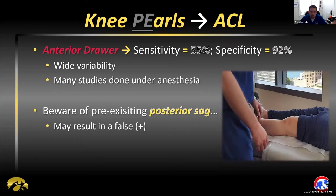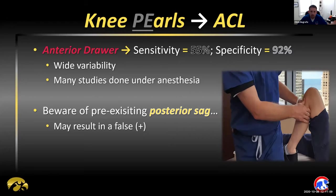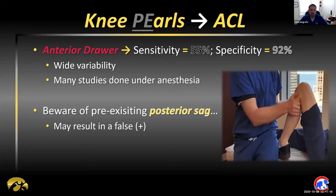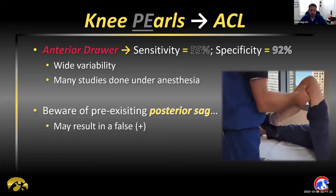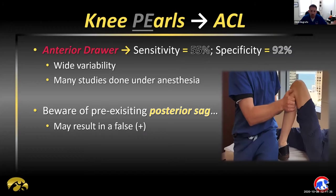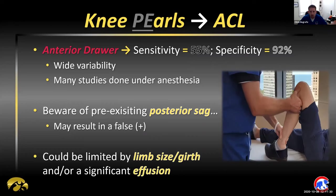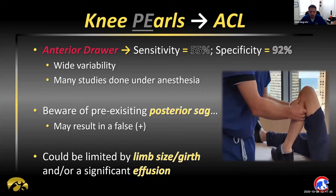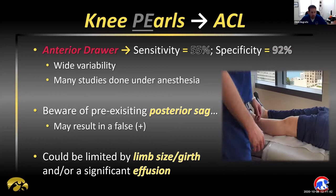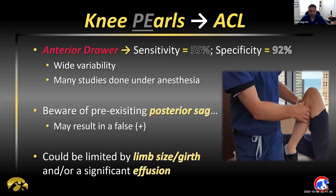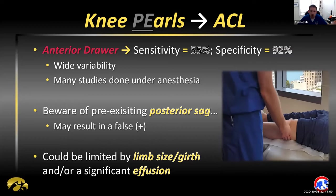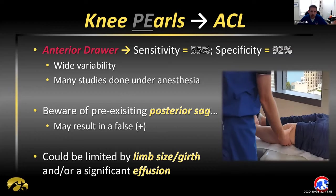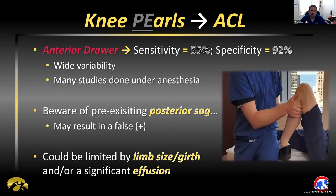With regard to the anterior drawer sign, be very aware of the posterior sag. If the tibia is already translated posteriorly at baseline, it will translate forward a fair amount and give you the feeling that it's lax when in actuality you're pulling it back to neutral first, and there may not be any anterior translation further. Also, in an acute injury with a large effusion, if there's fluid present things will slide and it can be hard to determine if there's a firm endpoint. Patients may also be unable to flex their knee to allow for proper positioning.